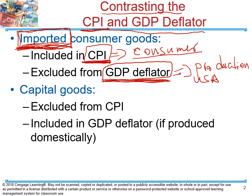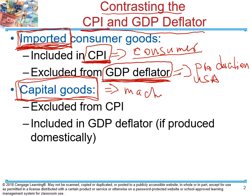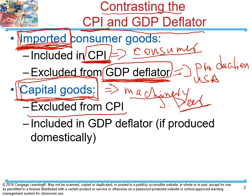The next difference is capital goods. From an economic point of view, capital goods are any structures, equipment, or machinery that you buy in order to produce a final good. Capital goods are most likely purchased by businesses — machinery, equipment, structures. Typical consumers don't buy those, like a John Deere tractor to go to college. So capital goods are excluded from the CPI.